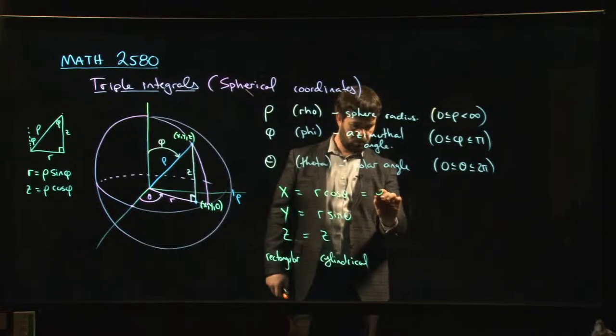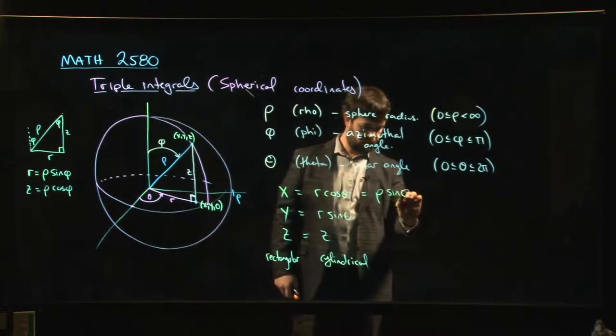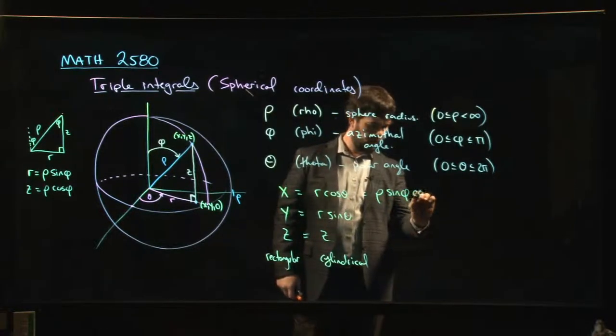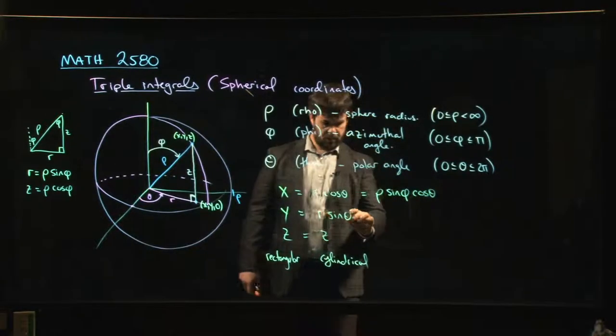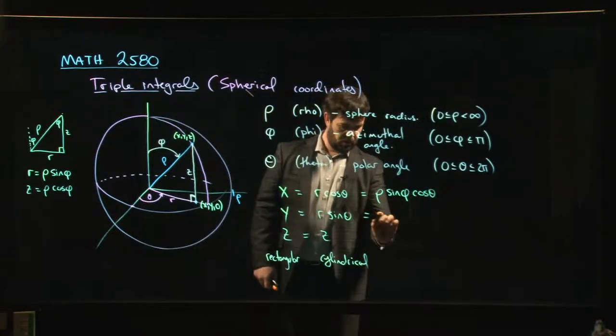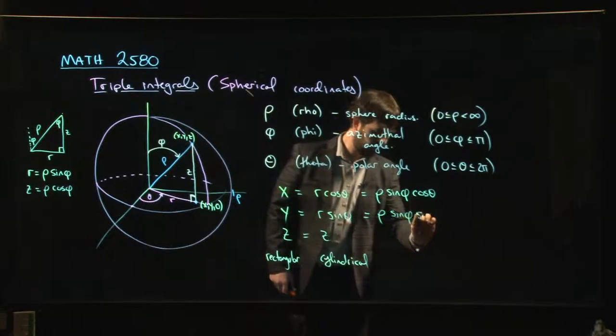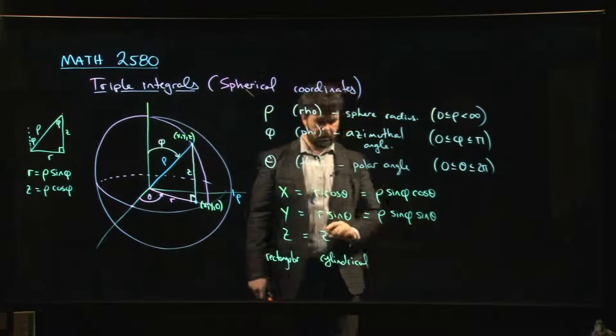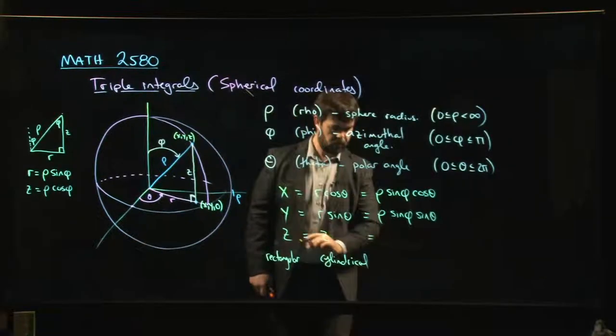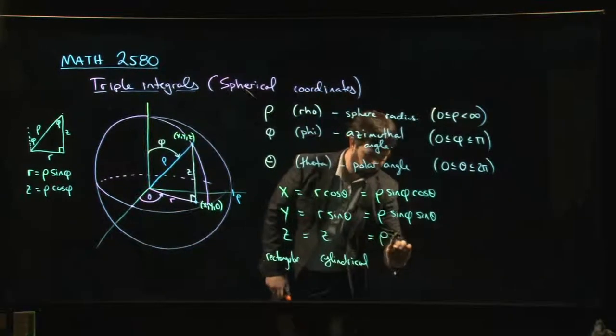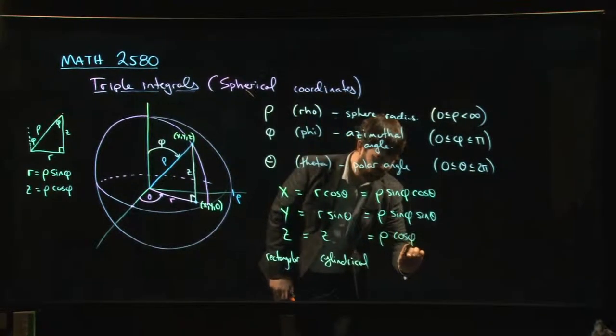So, r becomes rho sine phi. That cos theta is still there. For y, r, again, is rho sine phi. Sine theta is still there. And z becomes rho cos phi.